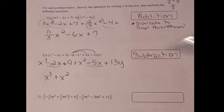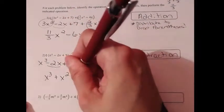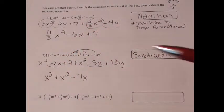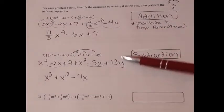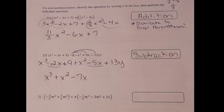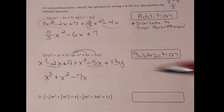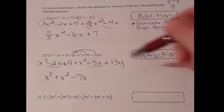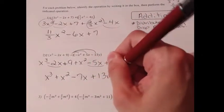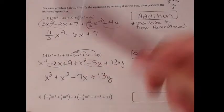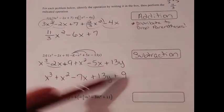Write the answer in descending order. x to the third has no like term — bring it down. Plus x squared has no like term — bring it down. x to the third plus x squared are not like terms; you cannot combine them. Negative 2x and negative 5x are like terms: combined they give negative 7x. The 13y has no like term — bring it down. Plus 9 has no like term — bring it down. Final answer has five terms.